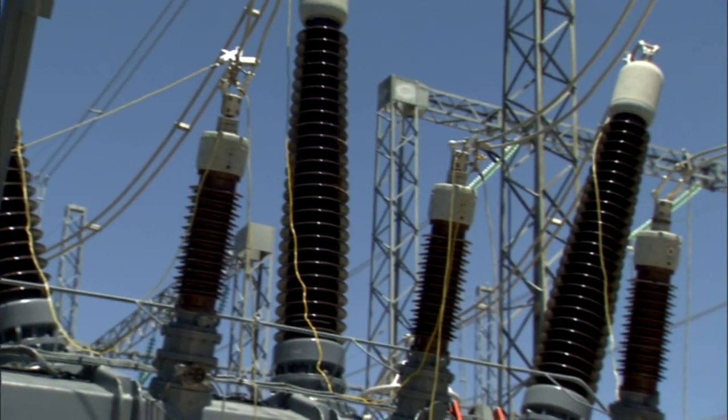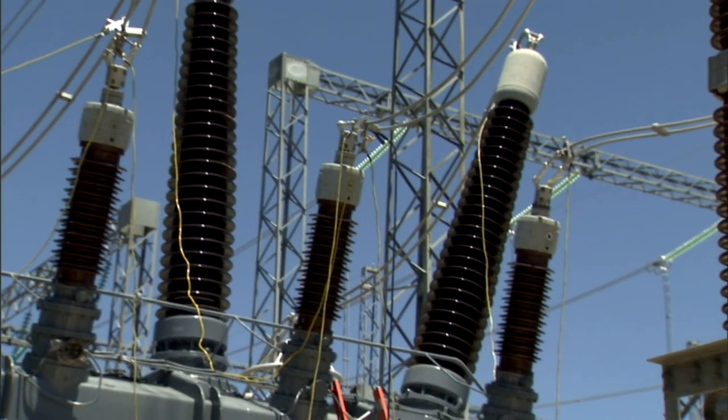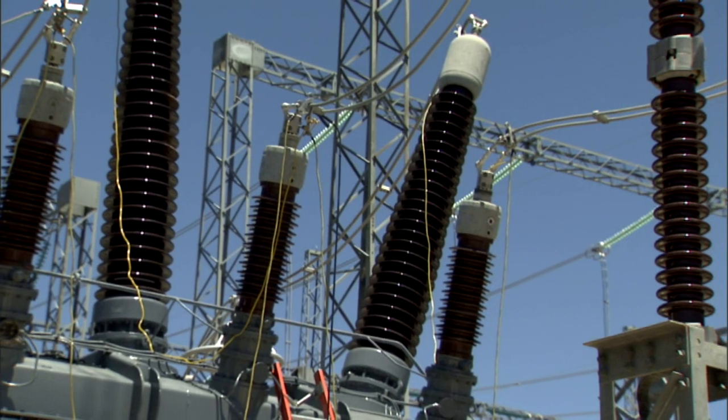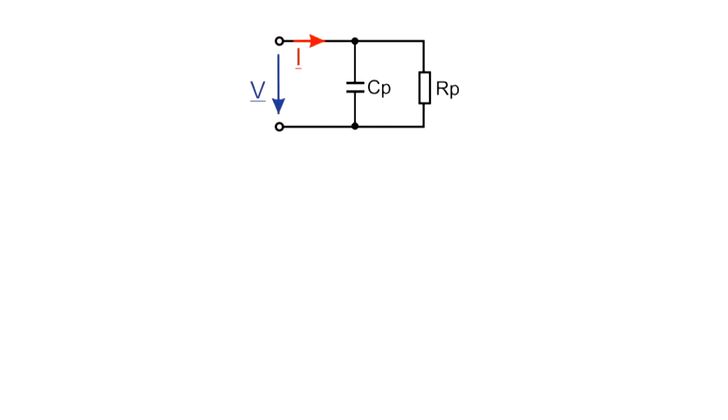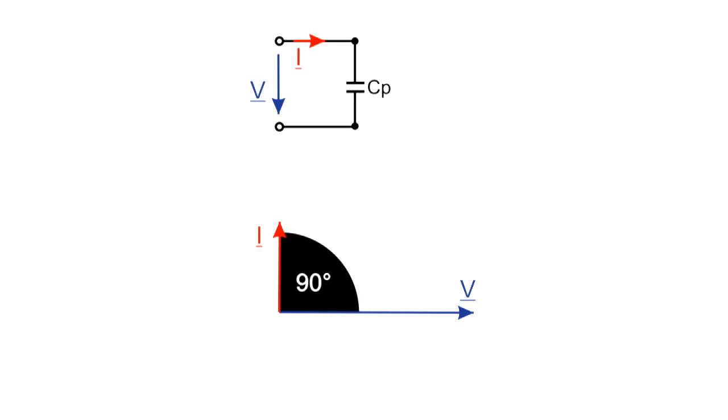At a particular frequency, for example 50 or 60 Hz, the behavior of the insulation can be represented with an equivalent circuit consisting of an ideal capacitor with a resistor in parallel. An ideal capacitor has no losses and a phase angle between the voltage and current of 90 degrees.